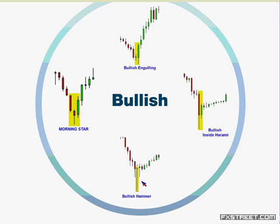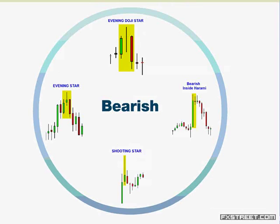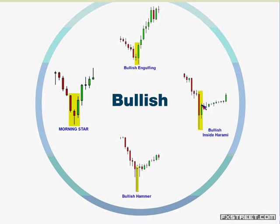For bearish formations we have the evening doji star, evening star, shooting star, and the bearish inside bar (Harami). Just in case people are unsure how to trade an inside bar, you basically want to wait for the next candle to close underneath the high or low of the inside bar — your actual trade trigger is the candle after.